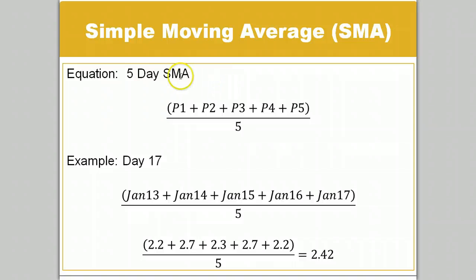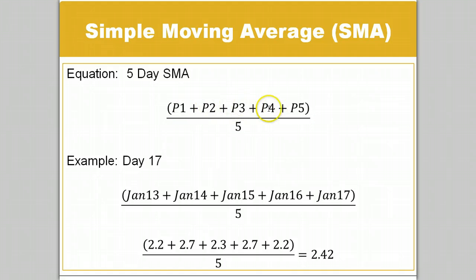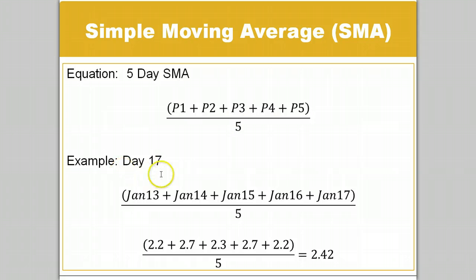For example, here we are looking at a time period of 5 days. To calculate the average, we would add all of the values from each period we want to average — period 1, period 2, period 3, period 4, and period 5 — then divide by 5. If we are using the data from the table shown earlier, we can choose any day, in this case day 17, and calculate a 5-day SMA of historical data by adding the value of the previous periods.